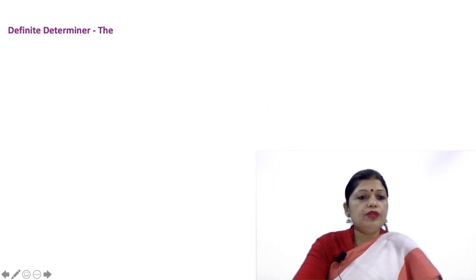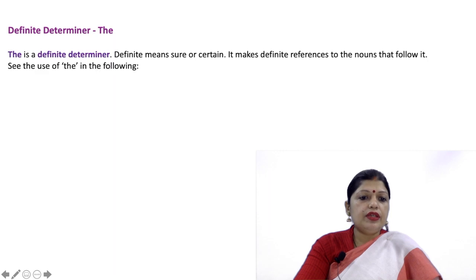Now let us talk about definite determiner The. The is a definite determiner. Definite means sure or certain. It makes definite references to the nouns that follow it. See the use of The in the following.